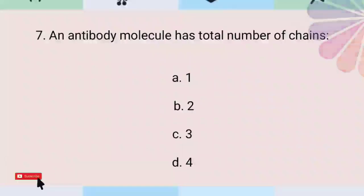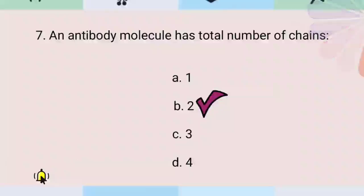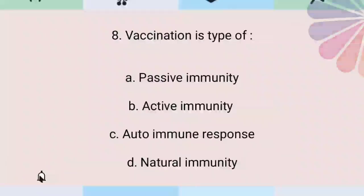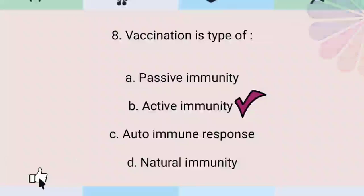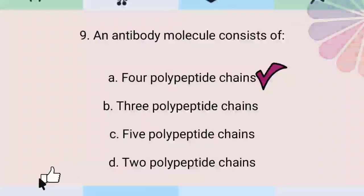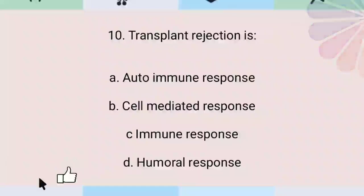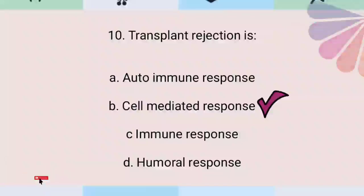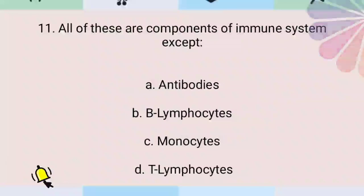An antibody molecule has a total number of four polypeptide chains. Vaccination is a type of active immunity. Transplant rejection is a cell-mediated response. All of these are components of the immune system except monocytes.